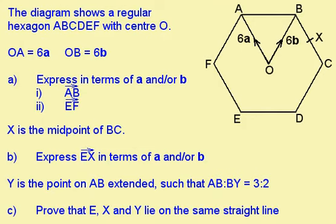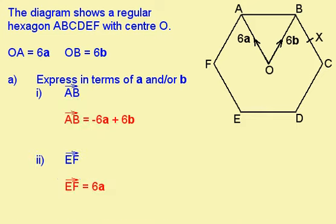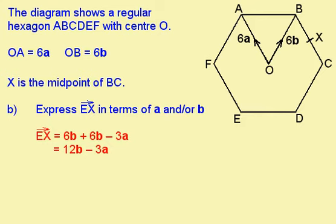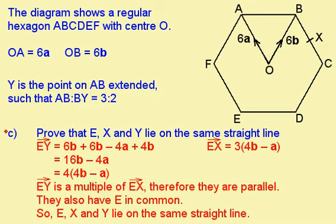Here's a very difficult question for you to try. Press pause and have a go at it. When you're ready for the answers, press play. Here are the answers for part A. Vector AB is minus 6 vector a plus 6 vector b — you might also write this as 6 vector b minus 6 vector a. Vector EF is 6 vector a. Here's the answer to part B. Vector EX is 12 vector b minus 3 vector a. For part C, the method was: find vector EY, find vector EX, and then prove that they're parallel. Then, as they have point E in common, points E, X and Y must lie on the same straight line.